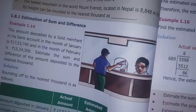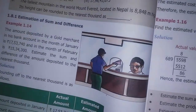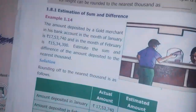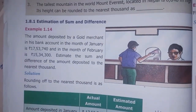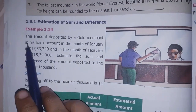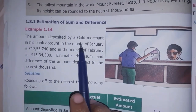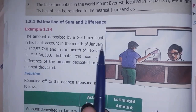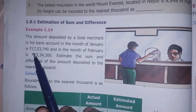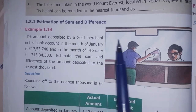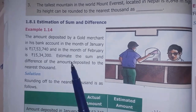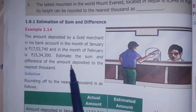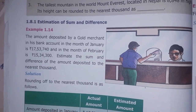Example 1.14, page number 20. The amount deposited by a gold merchant in his bank account in the month of January is 17,53,740, and in the month of February is 15,34,300. Estimate the sum and the difference of the amount deposited to the nearest thousand.